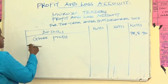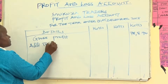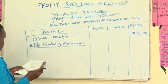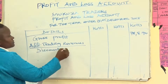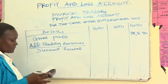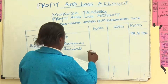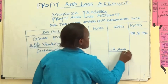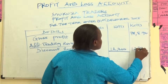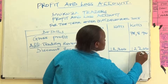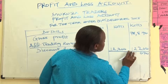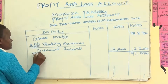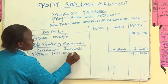Then we say: add revenues. We are given one revenue — discount received — of 12,200. Since there is only one revenue, the total is the same. We add it to the gross profit, giving us a total income of 91,070.